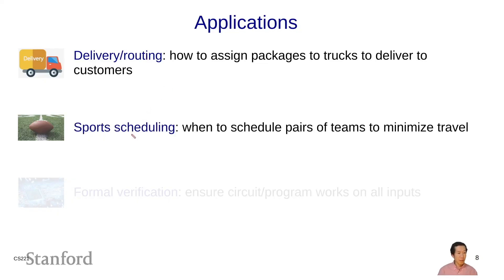Here's another example from sports scheduling. The NFL, every year, has to schedule which teams play which other teams and when those games are held. The schedule should minimize travel times between teams, fit the TV broadcast schedule, and be fair across teams.